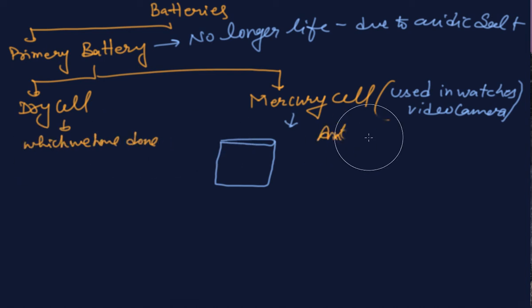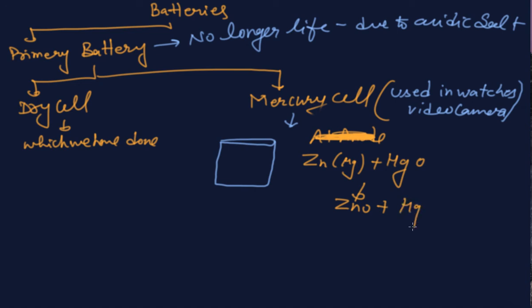Now at anode, the reaction is going on. Otherwise you will write down the reaction. Whenever combined reaction, you can write down and learn that its combined reaction is zinc mercury amalgam with mercury oxide, it will give you what? Zinc oxide plus mercury in liquid.